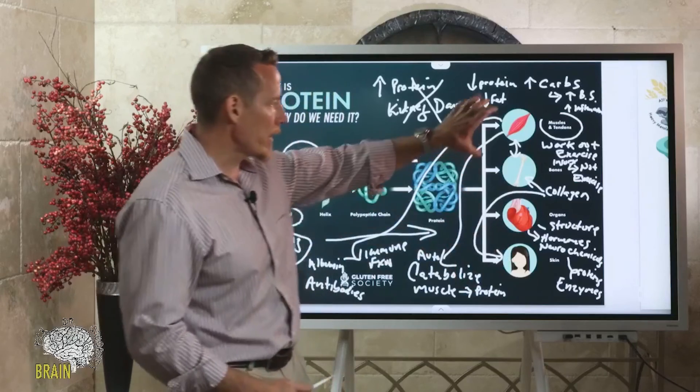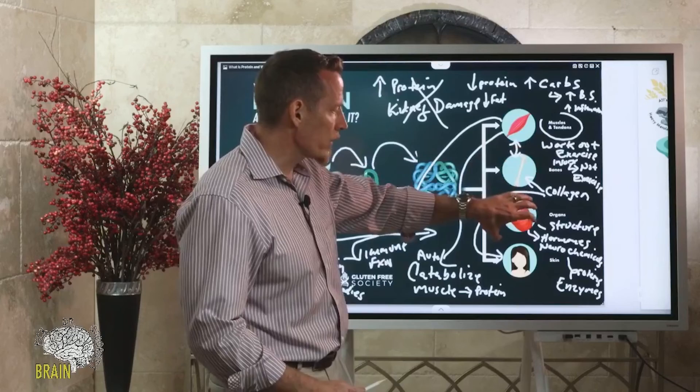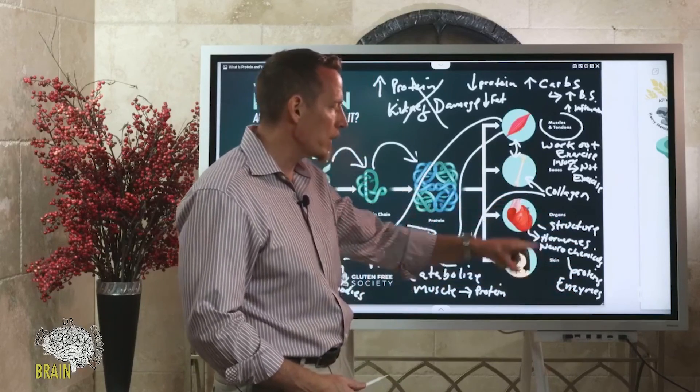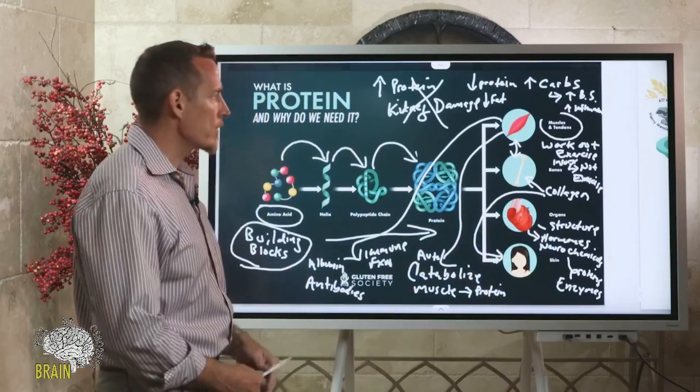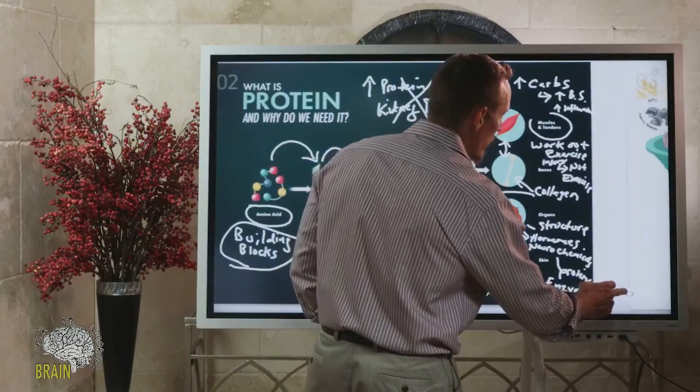These are some of the primary functions of protein. Again, there's a lot of functions here - your muscle tissue, your immune function, your bone structure, your organs and what they produce in terms of chemicals, and then your skin in terms of structure and beauty. Protein - can't live without it, don't make the attempt.